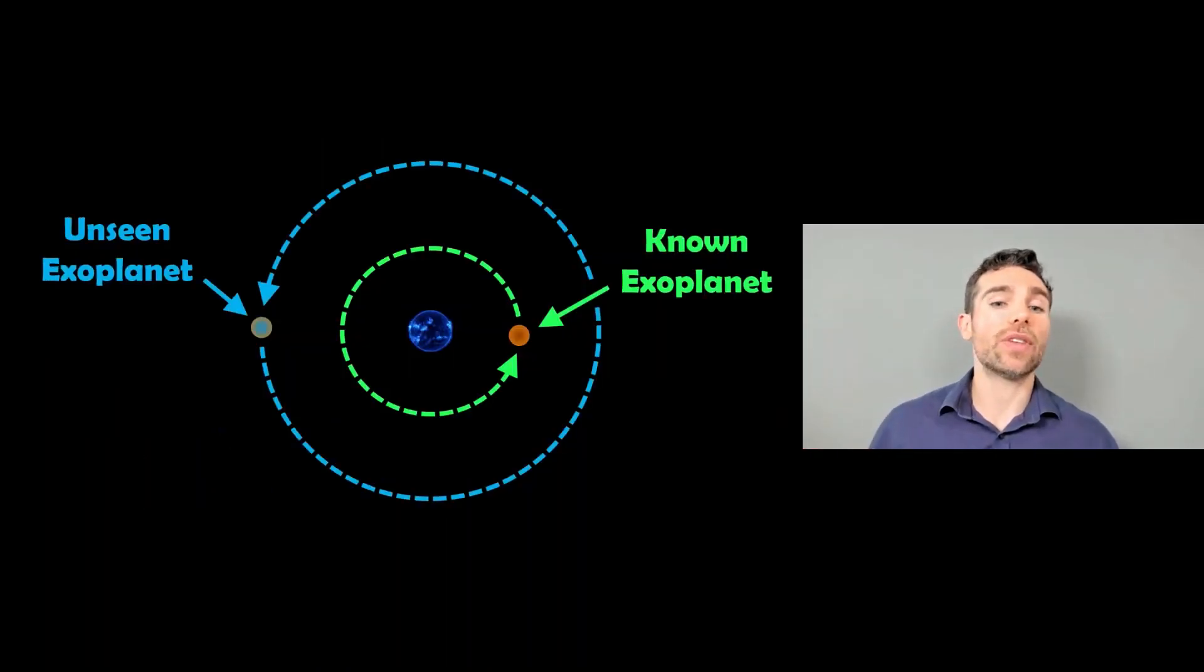The green orbit is the exoplanet we already know about, so this has been transiting across the star and we've got information about that. But if we look in detail, we're going to notice that there's going to be some variation in when those transits occur.